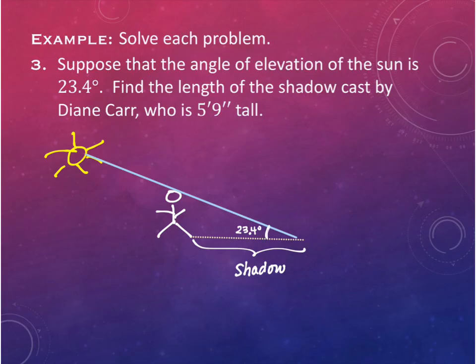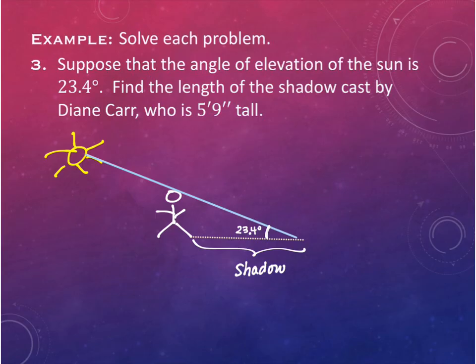The problem tells us she's five feet nine inches tall, which has mixed units of feet and inches - we need one or the other. The class chooses to convert to inches. Five feet becomes 5 times 12 equals 60 inches, plus 9 gives us 69 inches tall.